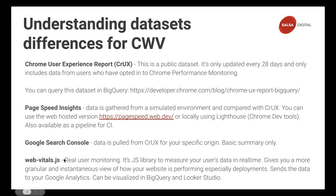Google Search Console gives you data for your specific site. If you sign up — which is free — you can get some basic data on your core vitals. It gives you a summary of groups of pages. In Drupal, for example, you might have a blog content type handled by one template. Search Console groups all those blog articles together, and if you improve your blog template it improves the entire group.